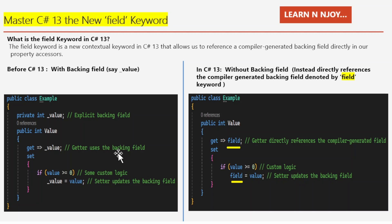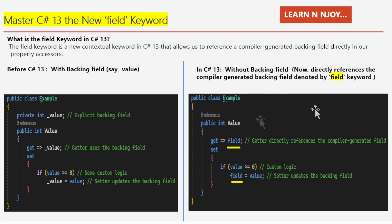That's where the field keyword comes in. Now in C# 13, without a backing field, you directly reference the compiler-generated backing field denoted by the field keyword. With C# 13, we can replace the manual backing field with the field keyword. Here again, there is a public class named Example, and if you notice, I have not explicitly declared a backing field. I've directly started with a public property named Value of type int, with a getter and setter using the field keyword instead.